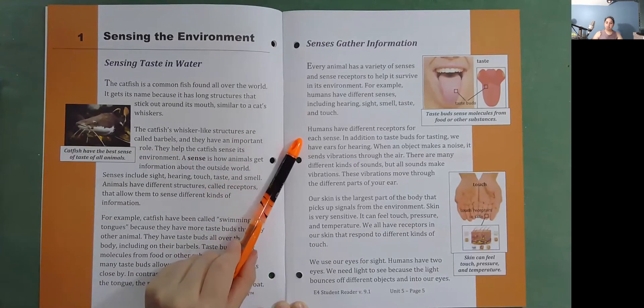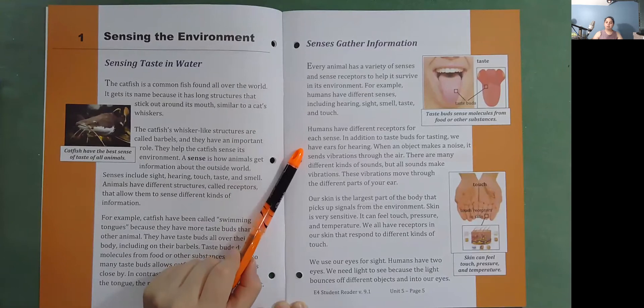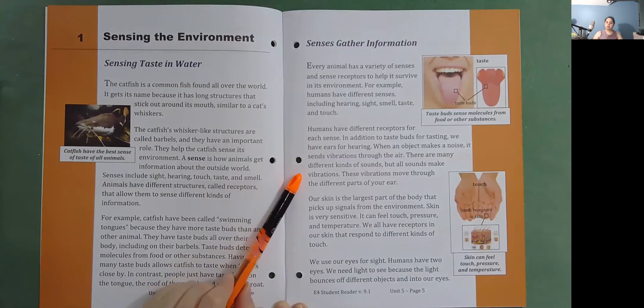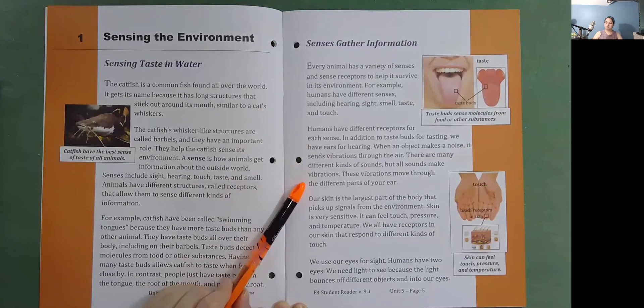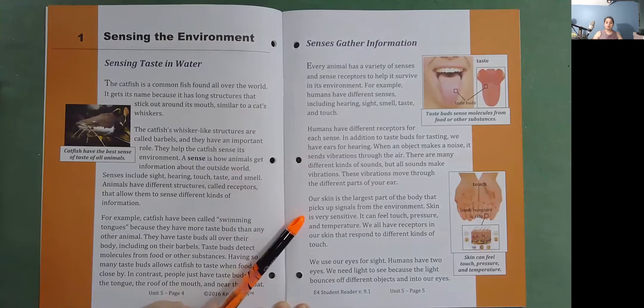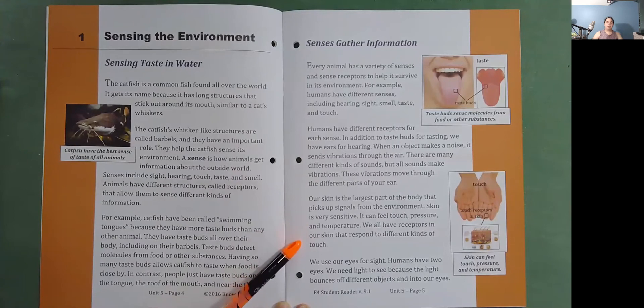In addition to taste buds for tasting, we have ears for hearing. When an object makes a noise, it sends vibrations through the air. There are many different kinds of sounds, but all sounds make vibrations. These vibrations move through the different parts of your ear. Our skin is the largest part of the body that picks up signals from the environment. Skin is very sensitive. It can feel touch, pressure, and temperature. We all have receptors in our skin that respond to different kinds of touch.